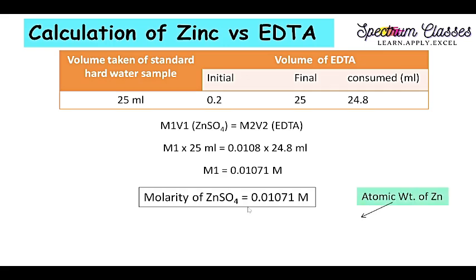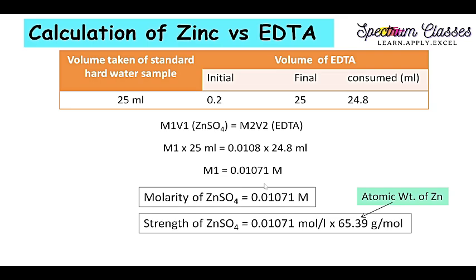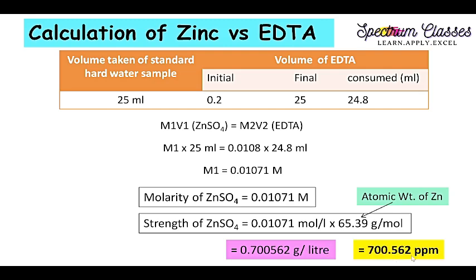Now we calculate the strength of zinc sulfate solution. To convert molarity to strength (grams per liter), we multiply by atomic weight or molecular weight. Since we want the concentration of zinc specifically, we use the atomic weight of zinc, which is 65.39 grams per mole. The moles cancel, giving grams per liter. Multiplying gives 0.700562 grams per liter. Converting to milligrams by multiplying by 1000 gives 700.562 milligrams per liter, which equals 700.562 ppm — the concentration of zinc in the given solution.